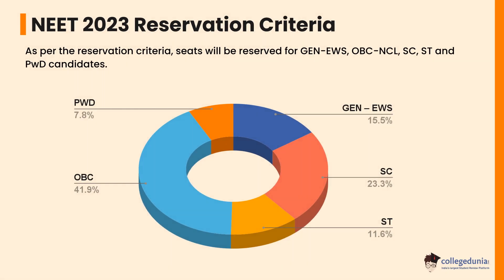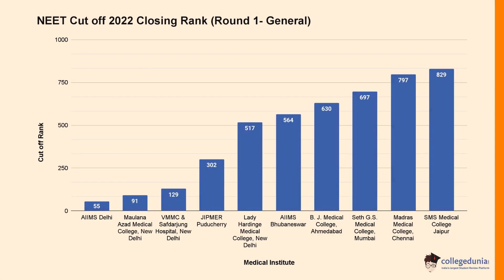As per the NEET 2023 reservation criteria, seats are reserved for General, EWS, OBC-NCL, SC, ST, and PWD candidates. The reservation for PWD category is 7.8%, for OBC category it is 41.9%, for General/EWS category it is 15.5%, for SC category it is 23.3%, and for ST category it is 11.6%.